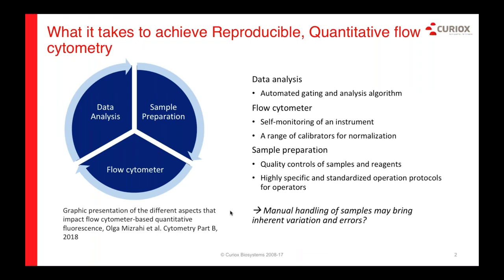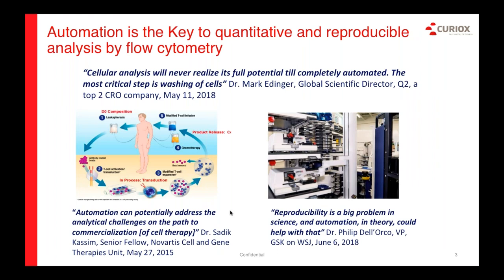So much has been done to standardize and improve flow cytometry data through instrument improvements and software automation for analysis. The area that has received the least attention for standardization is sample preparation. DropArray can enable standardization of sample preparation by eliminating much of the human variability in aspiration and flicking protein, and other aspects of washing. Reproducibility can be an issue in science, and washing of cells by automation is key to generating reproducible data, especially in cell therapy and flow cytometry.